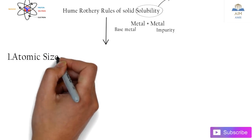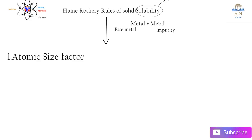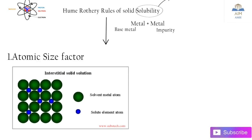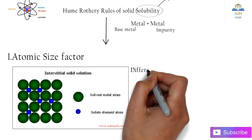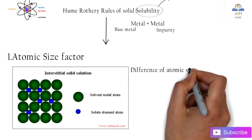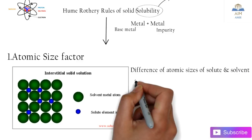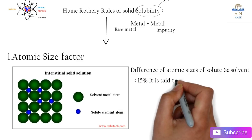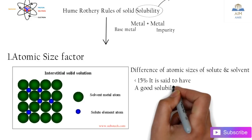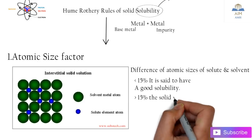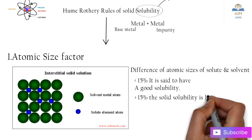The first one is the atomic size factor. The atomic size for the solute and the solvent plays a very important role in the solubility. If the difference of the atomic size is less than 15%, it is said to have good solubility. If it is more than 15%, the solubility gets limited.